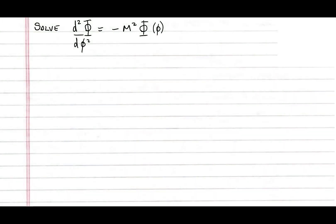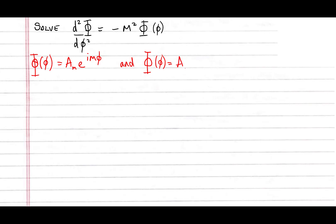Let's look at the phi equation. Many of you will recognize that the solutions to this differential equation are: phi(φ) = A_m · e^(imφ), and there is also a second solution: phi(φ) = A_{-m} · e^(-imφ).